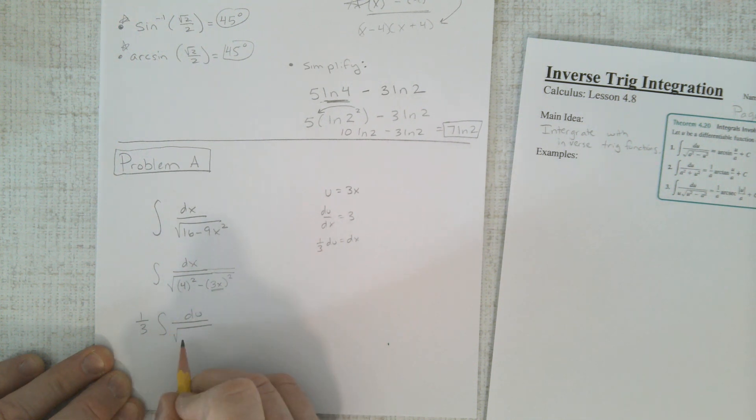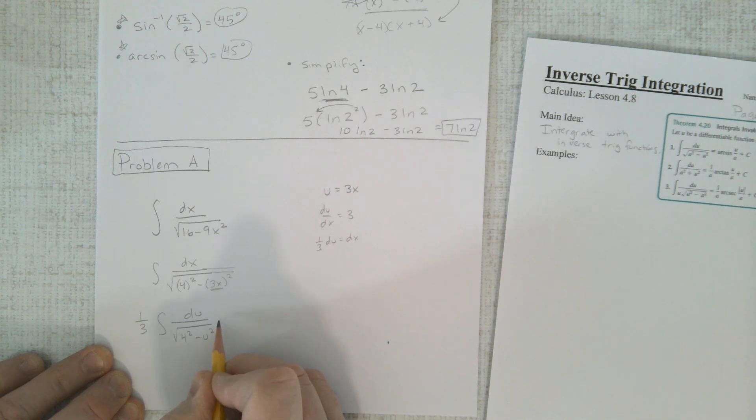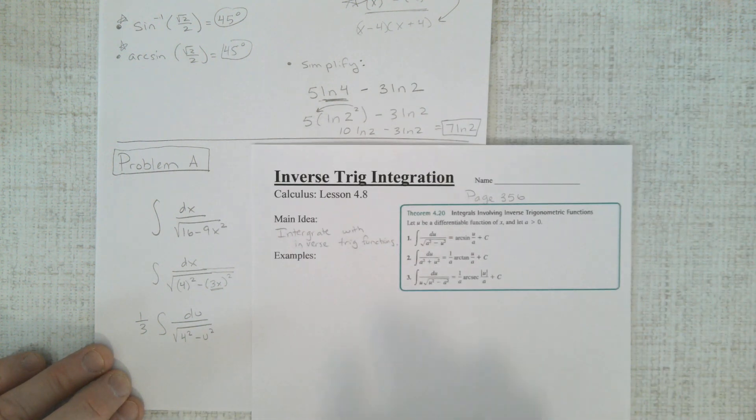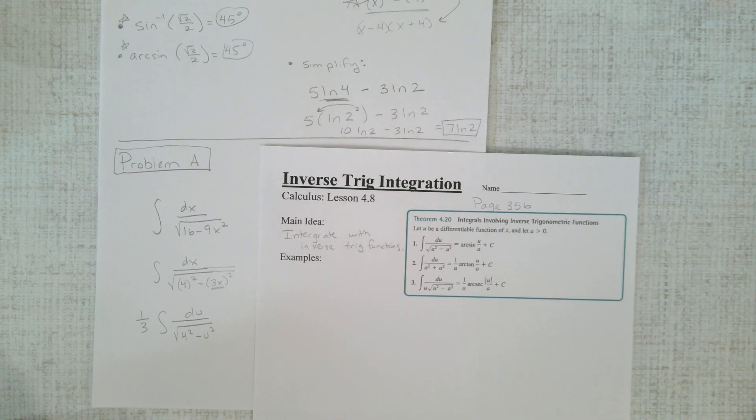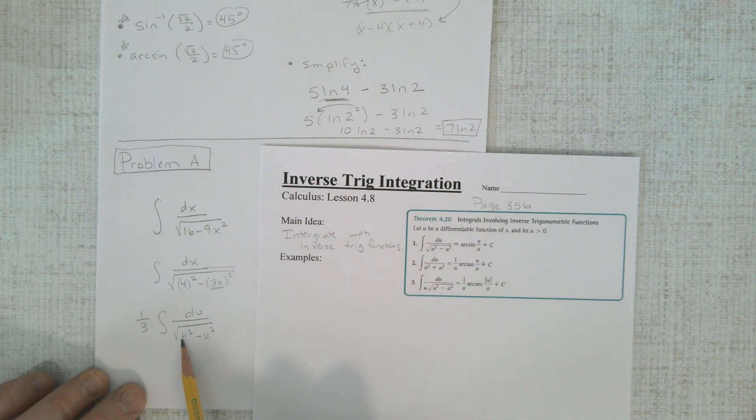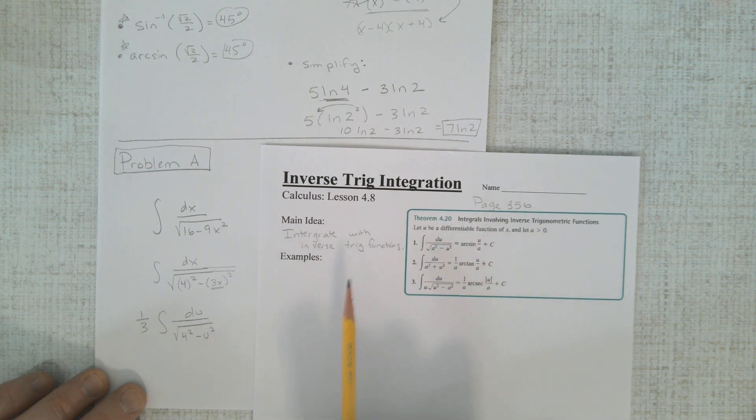There's my dx. Put that in there, 1 third with a du. Square root, 4 squared. Let's leave that alone, minus u squared. And now we have that letter for letter lined up perfectly. We have a du, du. We have an a, which is a constant. We have a u, which is a variable.